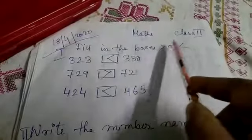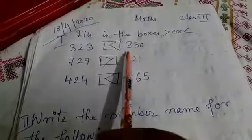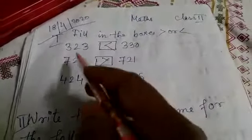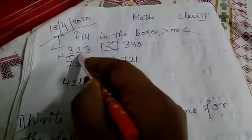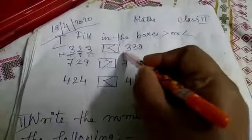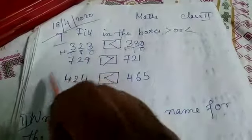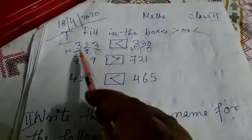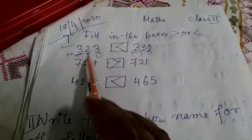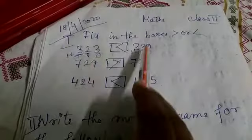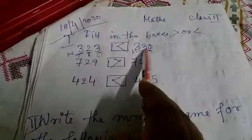Fill in the boxes with greater than and less than signs. 323 and 330. How will you understand? This is hundreds place, this is tens place, this is ones place. First, we will see hundreds place. Both the hundreds places are the same, so we will see the tens place. Tens place, this is 2, this is 3. We know 3 is greater than 2. Therefore, this side will be more.